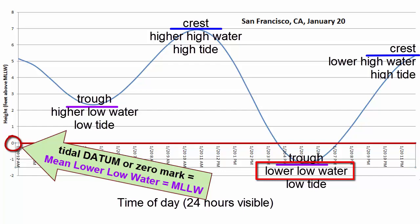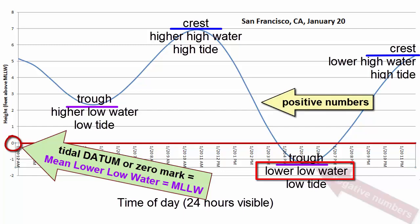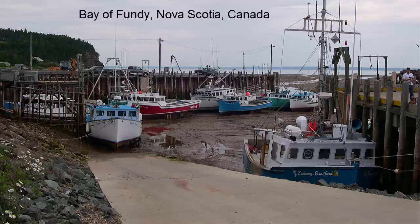Why use this for our zero instead of mean sea level? So that most of our tidal heights are measured as positive numbers, and we get negative heights only when the lower low waters are lower than average. These are considered special tides during which much of the coastline is exposed, and it's a good time to explore tide pools, dig for clams, or clean the bottom of your boat.